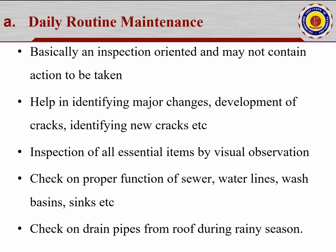In our homes, family members often report that the sewer line is blocked, the water line is causing problems, the washbasin can't drain properly, or there is leakage at the sink. These are part of daily routine maintenance. Also check drain pipes from the roof during rainy season — any cracks there may lead to seepage in the structure, which can cause critical problems. These are the factors to be considered in daily routine maintenance.